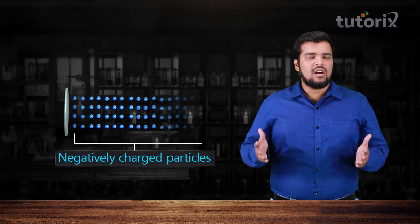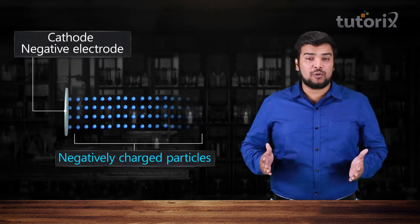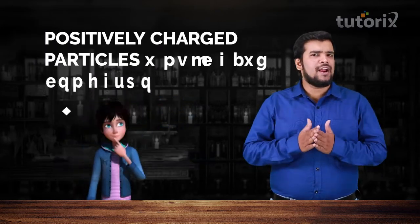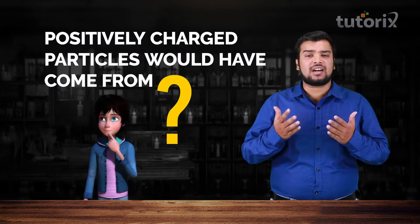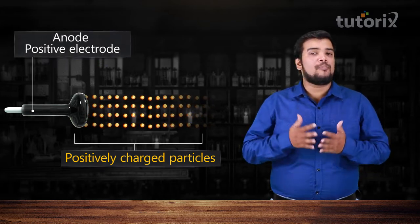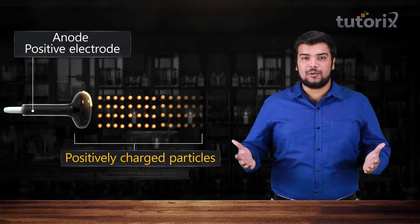Now, since negatively charged particles were originating from the negative electrode, which is the cathode, where do you think these positively charged particles will come from? Well, these positively charged particles will originate from the positive electrode, which is the anode.